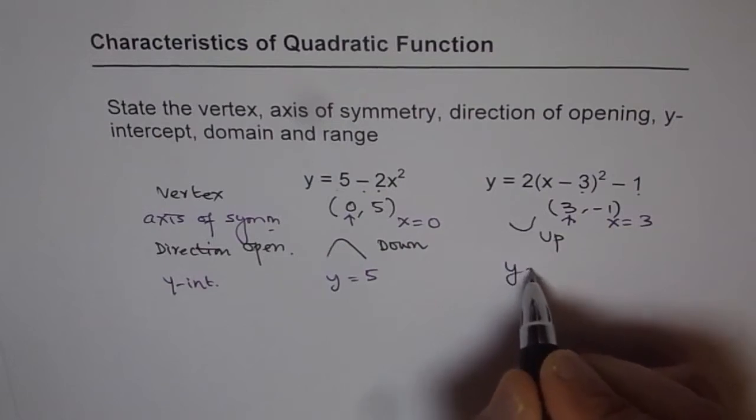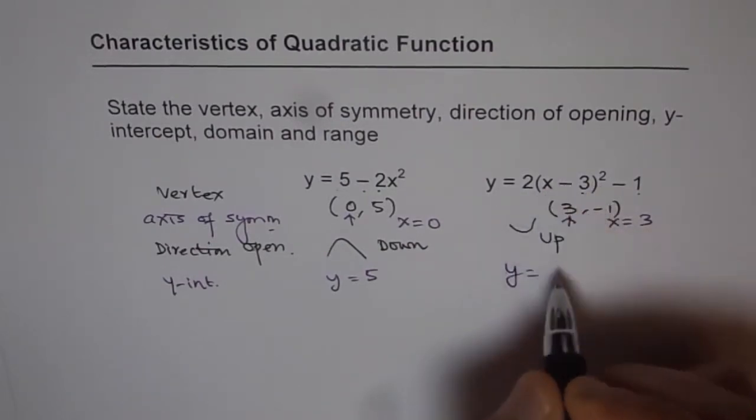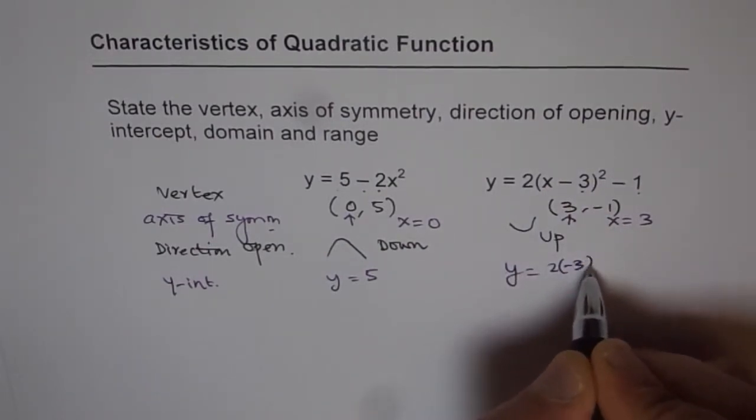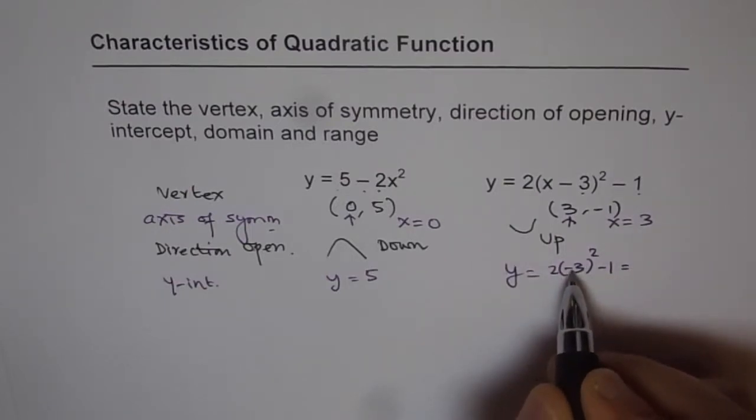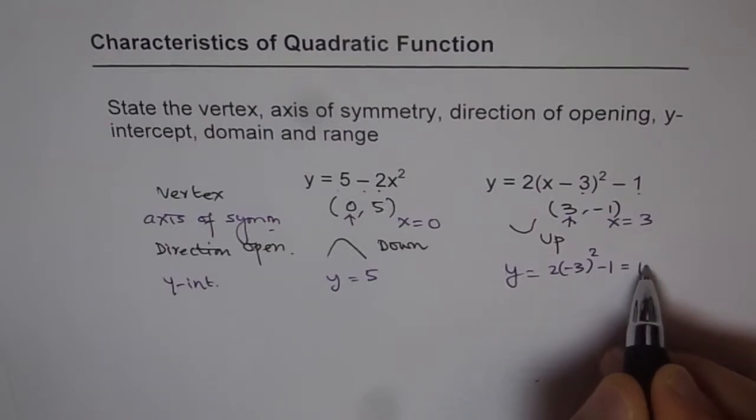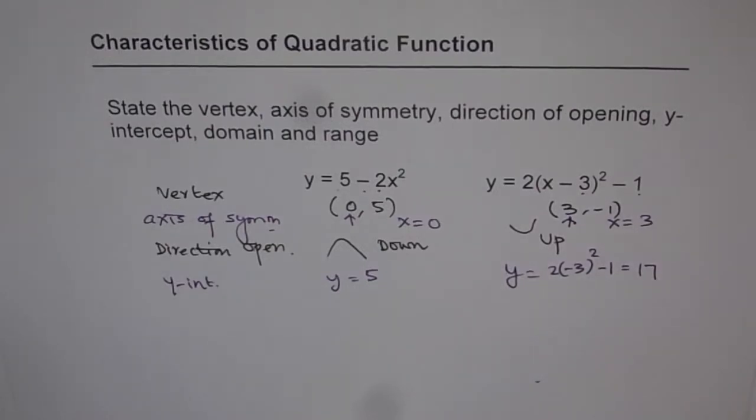Here if you put x equals 0 what do you get? You get 2 times minus 3 square minus 1. And minus 3 square is 9. 9 times 2 is 18. 18 minus 1 is 17. So y-intercept for our second equation is 17.